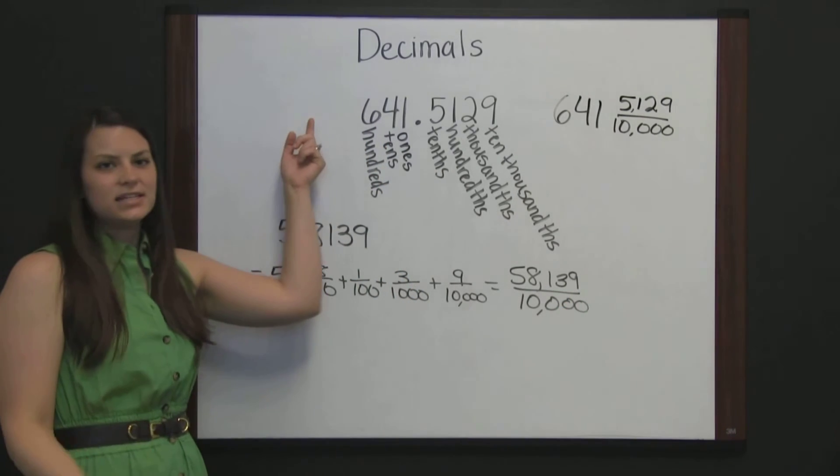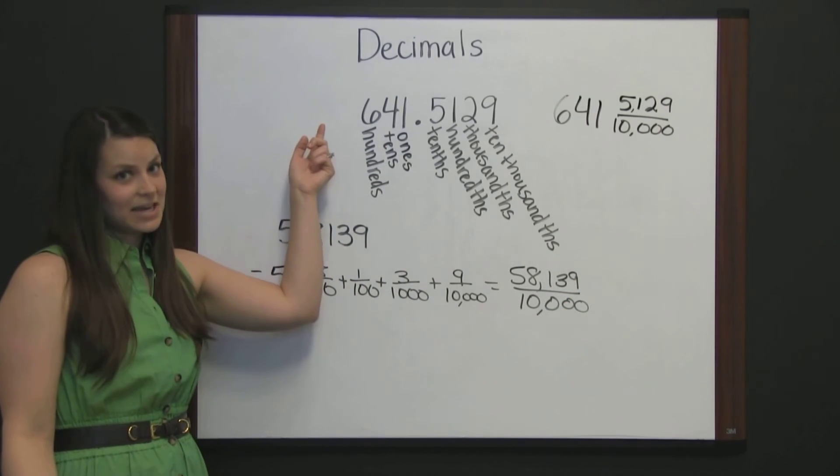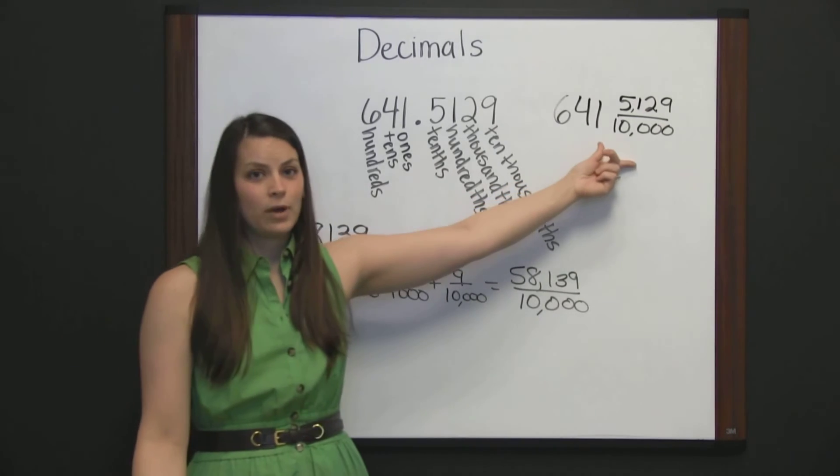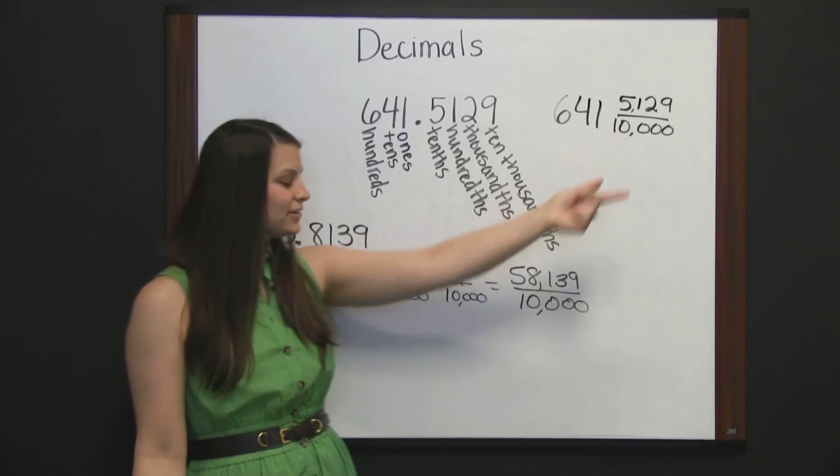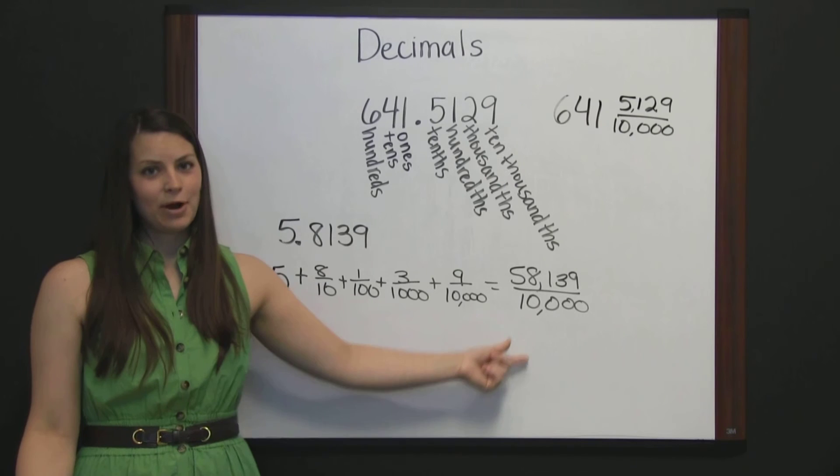So we've seen a decimal in decimal form. We've seen it represented as a mixed number, and also as an improper fraction.